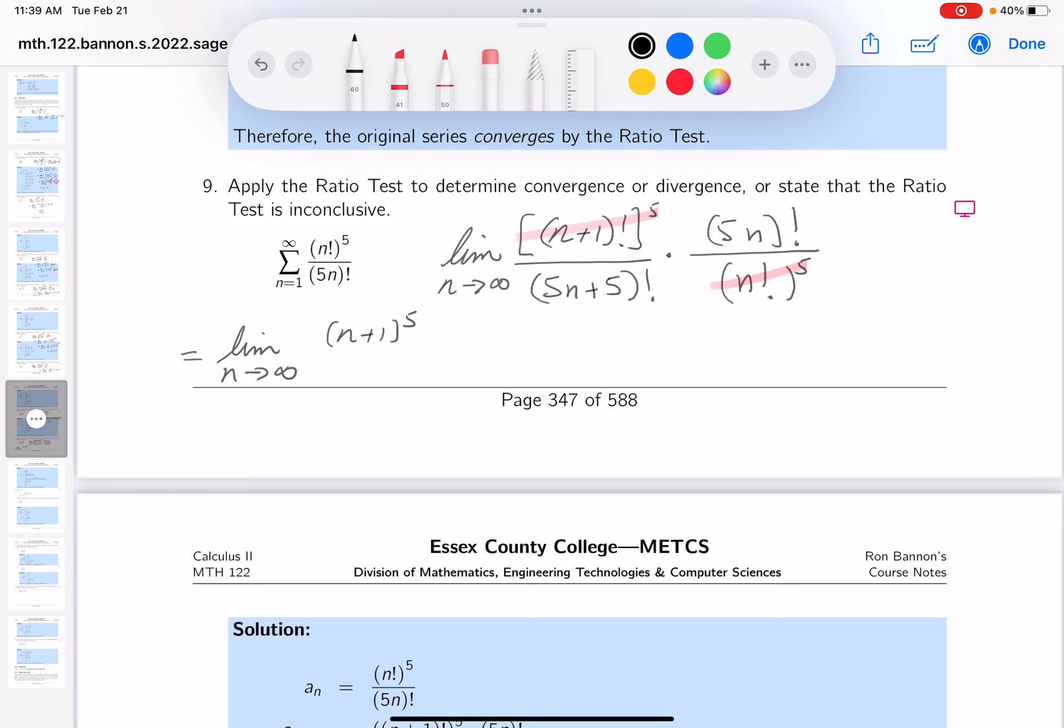Let's see if we can figure this one out. And the bottom is 5n+5, 5n+4. This is like a deja vu. 5n+3, 5n+2, 5n+1. And then you get 5n!.